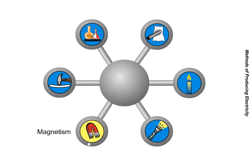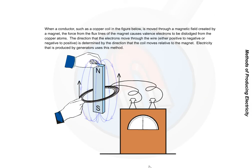Magnetism. When a conductor, such as a copper coil, is moved through a magnetic field created by a magnet, the force from the flux lines of the magnet cause valence electrons to be dislodged from the copper atoms. The direction that the electrons move through the wire is determined by the direction that the coil moves relative to the magnet. Electricity that is produced by generators uses this method.